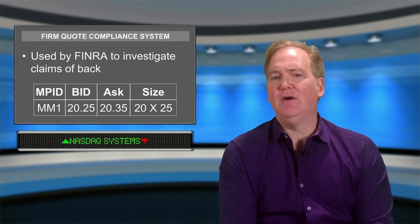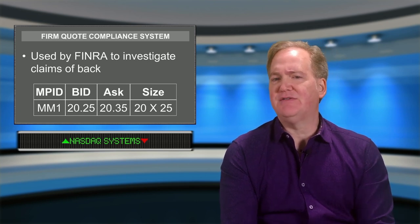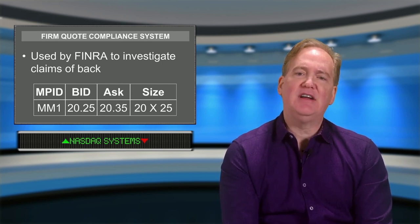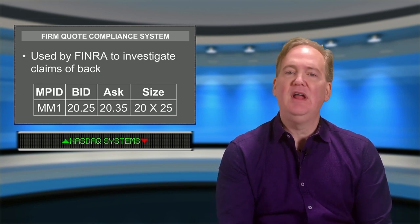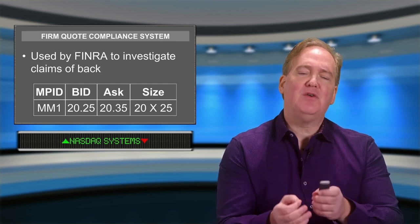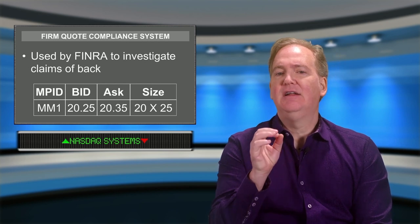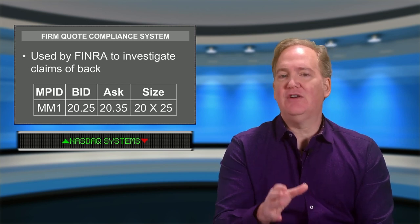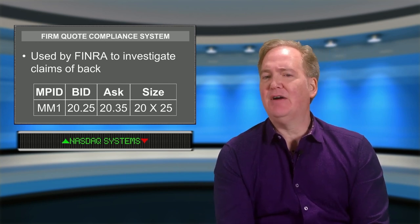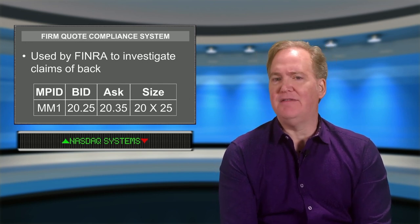An interesting scenario involves a market maker receiving a phone call from an inquiring broker-dealer wanting a quote for an illiquid stock. The market maker says it looks like a $10 bid offered at $10.50 — that is a subject quote, not a firm quote. The inquiring broker-dealer cannot hold that market maker to those subject quotes. However, if the broker-dealer providing a subject or qualified quote fails to subsequently provide them with a firm quote — prices at which they are willing to trade — that is a variation of a backing away violation.